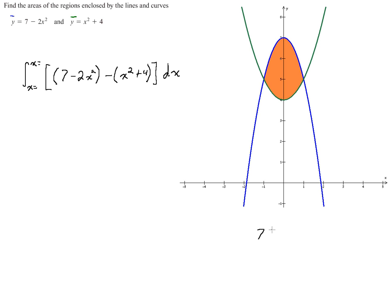then you can set these two curves equal to each other and solve for x. So I have 7 minus 2x squared equals x squared plus 4. And then when I solve that out, I do a little bit more work, and I get 3x squared equals 3.